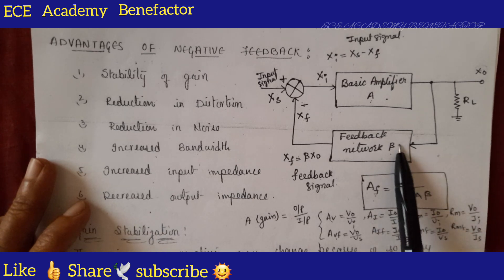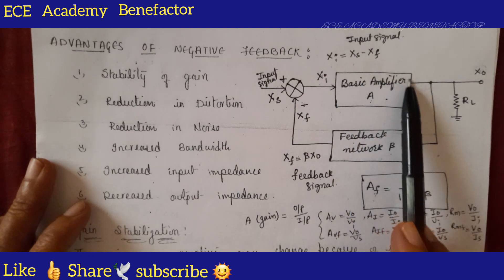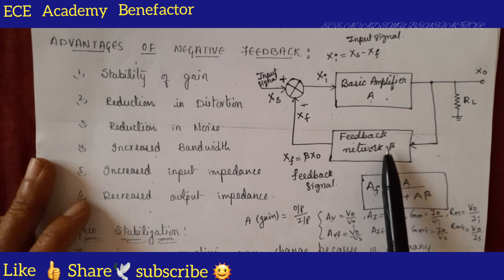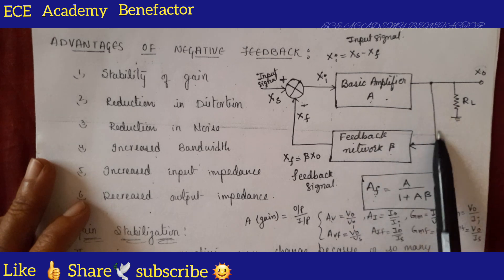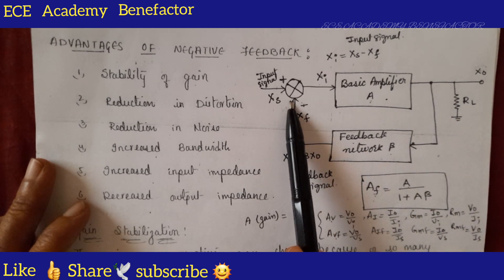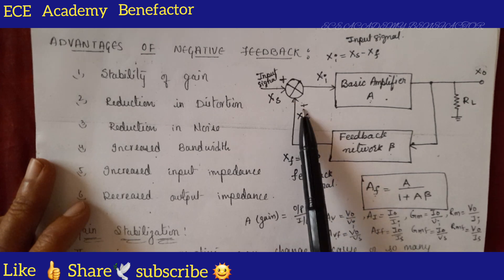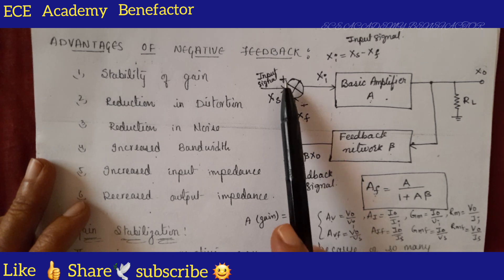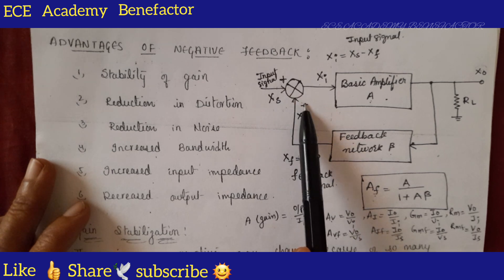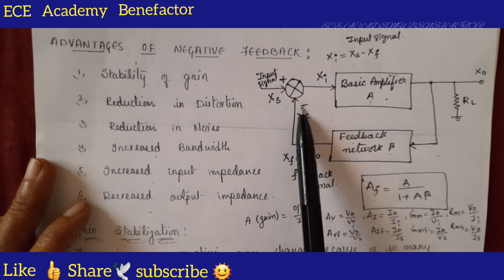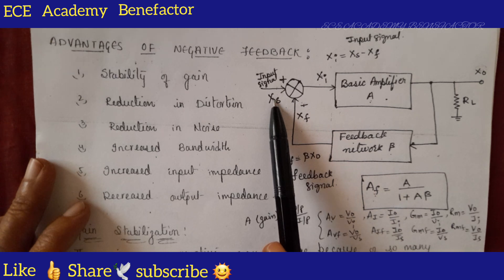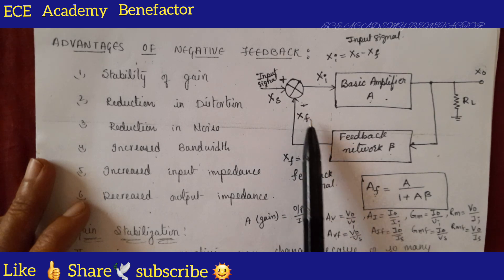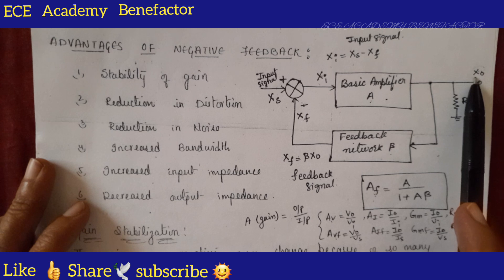Coming to the block diagram of negative feedback — this is the basic amplifier of gain A, and a feedback network of ratio beta. This feedback network will take a part of the output and feed it back to the input at the mixer. The feedback signal will be in opposite phase with the incoming input signal, which is shown by the polarity plus and minus, indicating that the feedback signal is out of phase with the incoming input signal. Xi is the difference signal Xs minus Xf. What is Xf? Beta times of X-naught, the output signal.